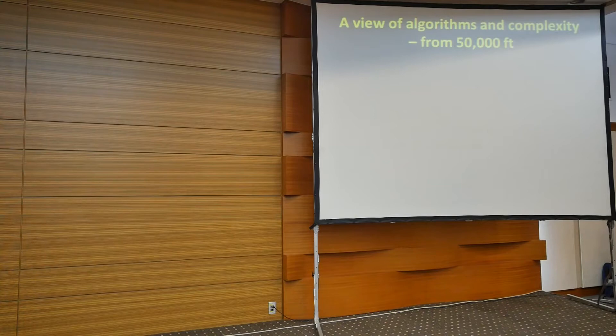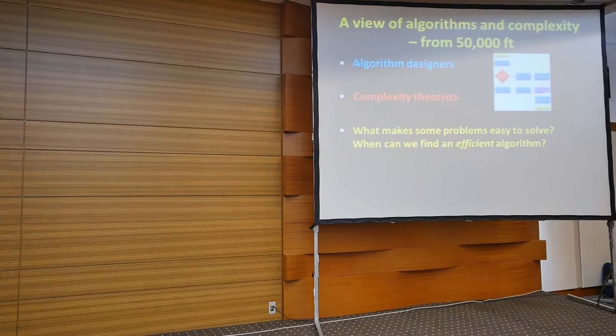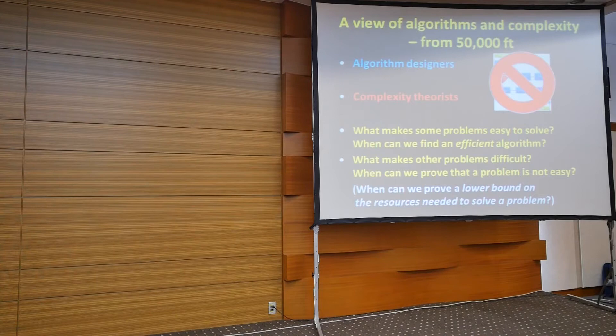Let's start by recalling the traditional issues in algorithms and complexity. This is a view from 50,000 feet. In this traditional view there are two kinds of people in theory of computer science: algorithm designers and complexity theorists. Algorithm designers ask what makes some problems easy to solve — when can I find an efficient algorithm for solving a problem? The complexity theorist is trying to do something quite different: what makes other problems difficult? When can we prove that a problem is not easy, that there is no efficient algorithm?